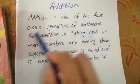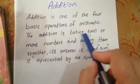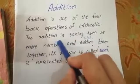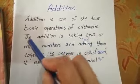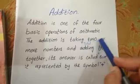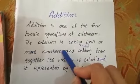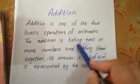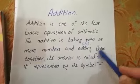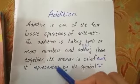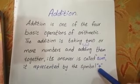Addition is one of the four basic operations of arithmetic. The addition is taking two or more numbers and adding them together. Its answer is called sum. It is represented by the symbol plus.